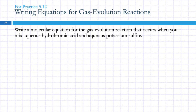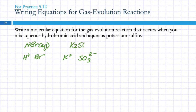So here's an example problem. Write a molecular equation for the gas evolution reaction that occurs when you mix aqueous hydrobromic acid and aqueous potassium sulfite. They gave us this hint in here, gas evolution reaction. So hydrobromic acid, that's hydrogen ions and bromide ions, so that's HBr. And potassium sulfite. Potassium is K+. Sulfite is SO3, 2-. So that would be K2SO3.